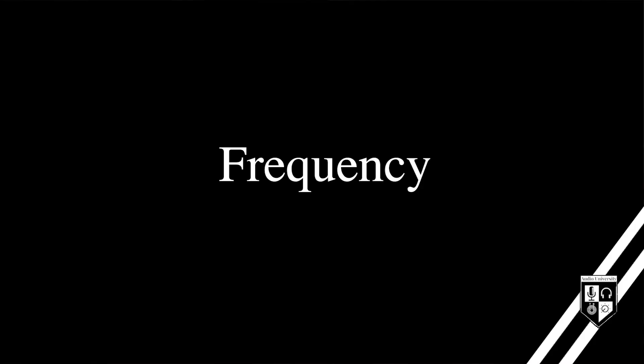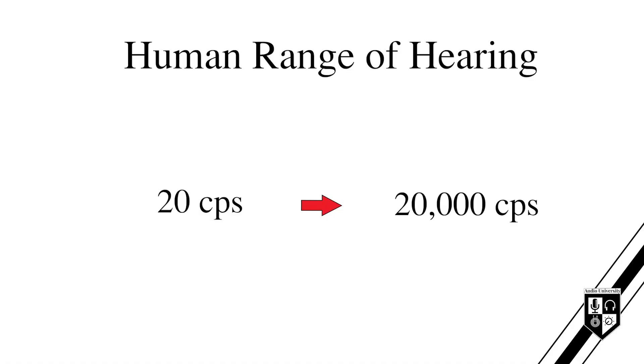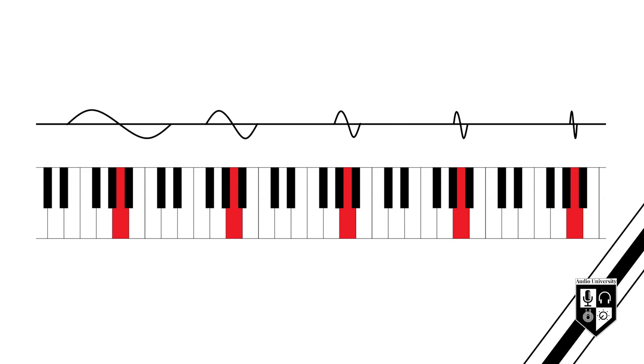Sound waves oscillate very quickly, going through many cycles of positive and negative pressure per second. Frequency describes how many of these cycles are completed per second. Humans are capable of hearing sounds in the range of 20 cycles per second to 20,000 cycles per second. Frequency corresponds to musical pitch, although musical pitch is affected by other factors as well. Generally speaking, the higher the frequency, the higher the pitch. For example, if you double the frequency of a sound, the pitch of the sound will rise by one octave.